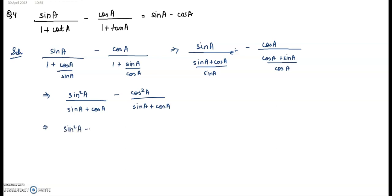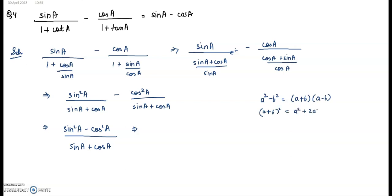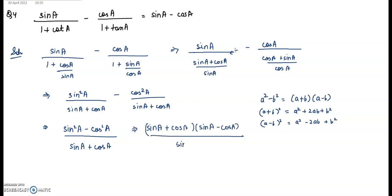When you divide, you get sin²A/(sinA + cosA) minus cos²A/(sinA + cosA). Since the denominator is the same, this becomes (sin²A − cos²A)/(sinA + cosA). Apply the formula a² − b² = (a+b)(a−b), giving (sinA + cosA)(sinA − cosA)/(sinA + cosA). The (sinA + cosA) cancels, and we get sinA − cosA, which is the right hand side. Hence proved.